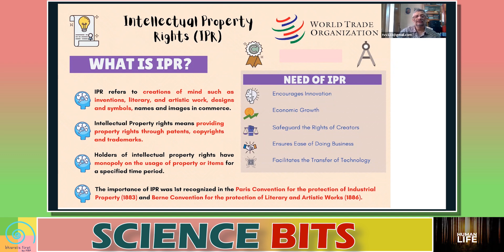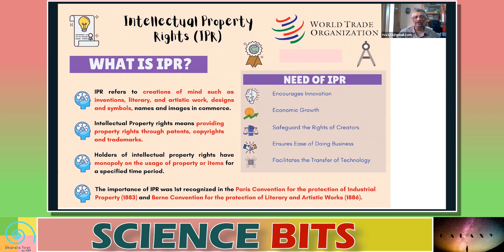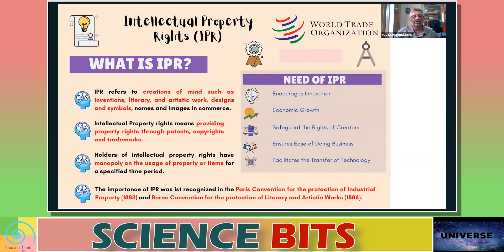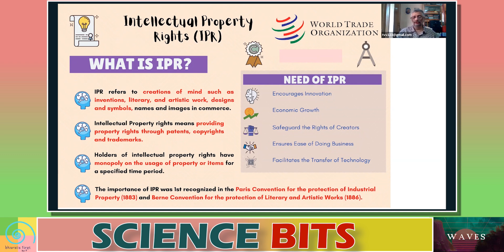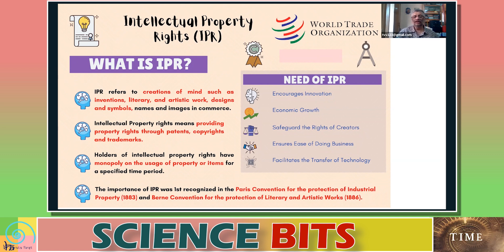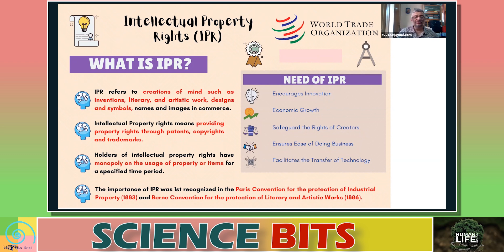Intellectual property rights cover designs, symbols, names, and images which are used in commerce. It provides a property right through patents, copyrights, or trademarks. Like if you are looking at land, the property right of land is provided by what is called a patta, which gives you a legal right over that piece of land. Similarly, intellectual property is provided by patents, copyrights, and trademarks. The people who hold this property right through a patent will have the monopoly in using that as a property — they can rent it, they can sell it.